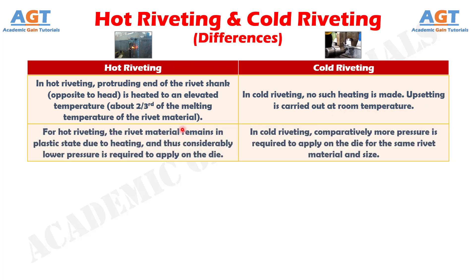Number 2: for hot riveting, the rivet material remains in a plastic state due to heating, and thus considerably lower pressure is required to apply on the die. Whereas in cold riveting, comparatively more pressure is required to apply on the die for the same rivet material and size.